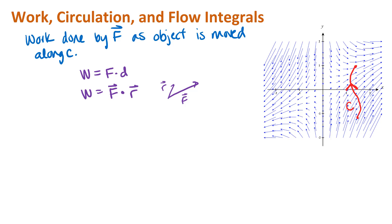We basically want to extend that idea here. The complicating factors are that I've got a variable force — my force vectors have different directions and magnitudes at different places along the path — and I don't have displacement along a straight line but along a curve. The idea is to use integrals: partition the curve into pieces, use small vectors to represent those pieces, dot F with those little r vectors at different points, and define a line integral that gives us the work.